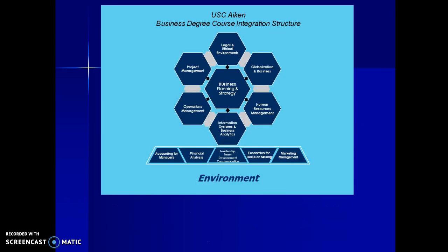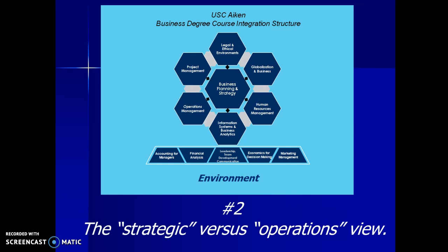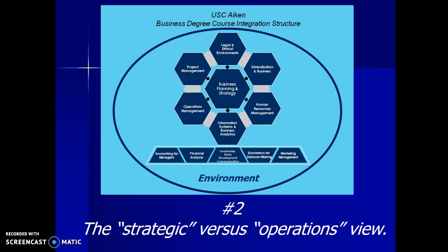Three other perspectives follow. The first is the strategic versus operations view of strategy. Within that circle, we have a lot of business functions — those are operational areas, with the exception of the middle function, which is business planning and strategy itself. When we draw a circle around that and call it the environment, we're concerned about strategic issues. Everything is of concern when operating within the environment, as opposed to a particular function, which we'd call an operational concern.